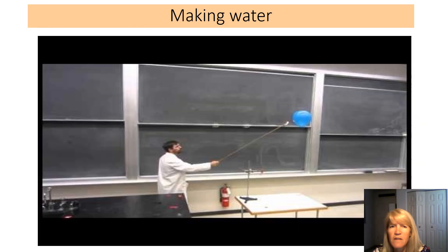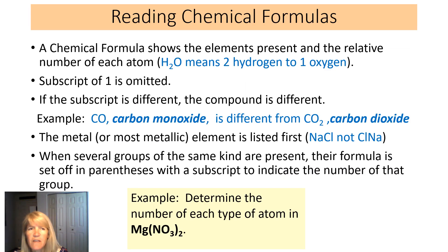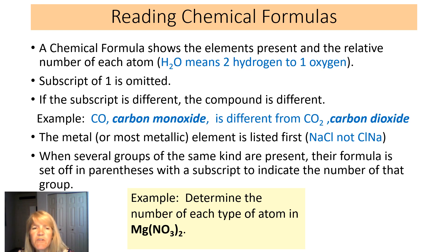There's a video in the regular PowerPoint showing the making of water. The chemical formula tells you the ratio of atoms. When you see H₂O, that means two hydrogens to one oxygen. The subscripts tell you how many of each element. If you don't see a number, that means one — the subscript of one is omitted.